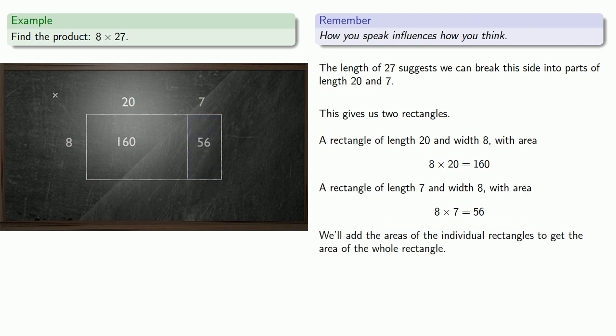We'll add the areas of the individual rectangles to get the area of the whole rectangle. And remember, the area is the product. So 8 times 27 is 216.